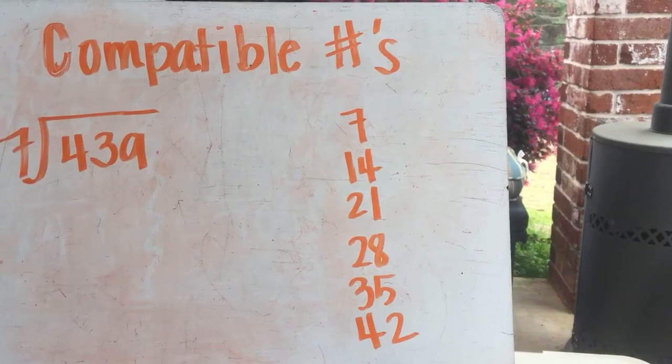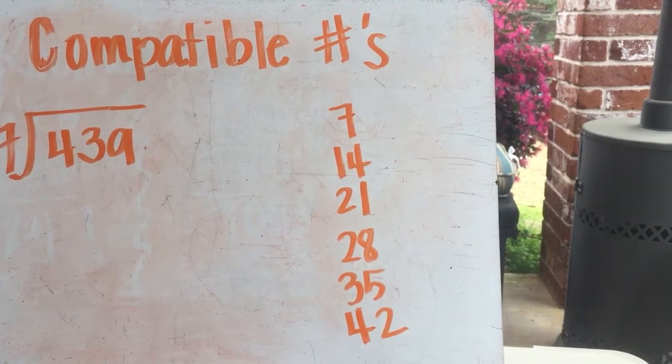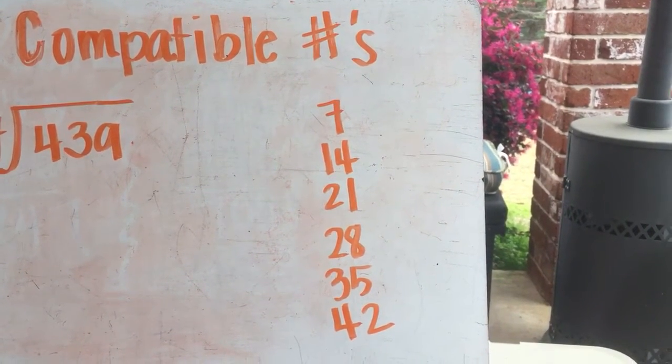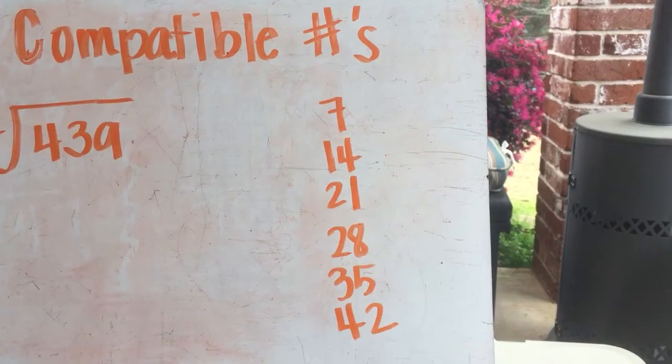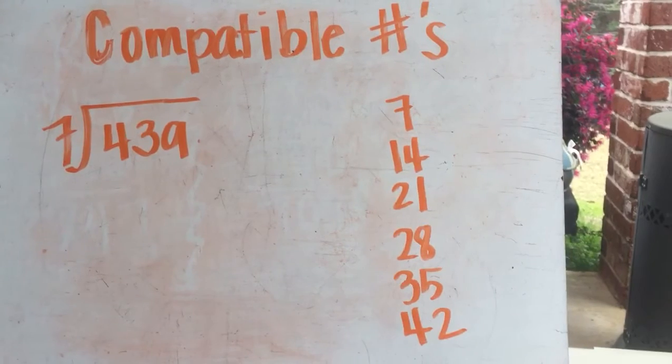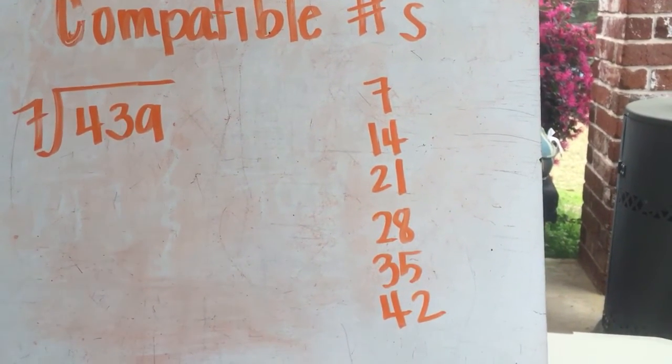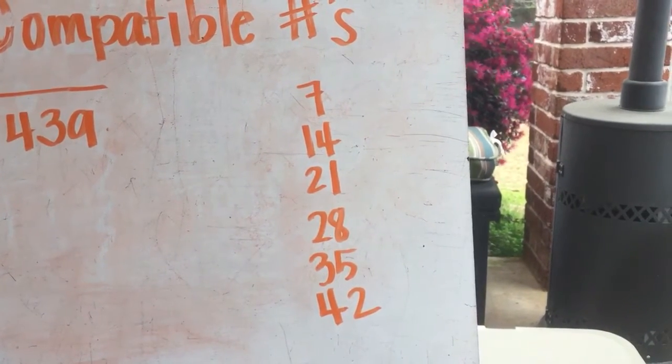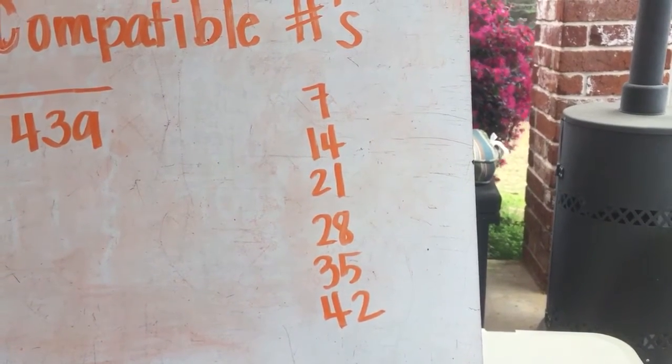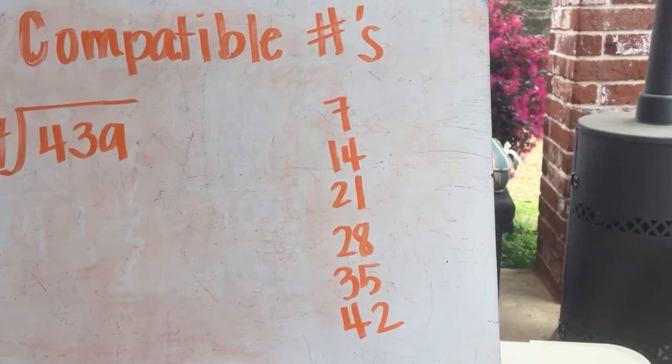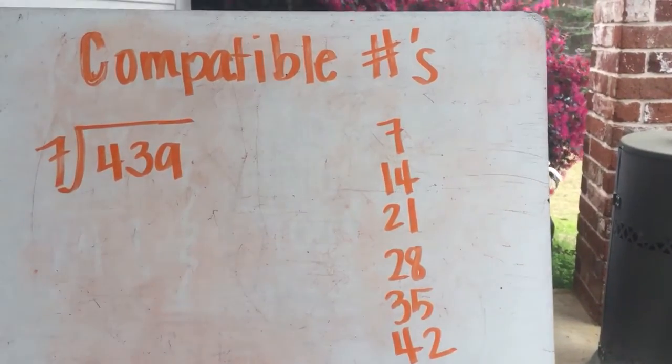It is very similar to making estimations. In fact it is making an estimation using rounding, but instead of being given a place value to round to, compatible numbers encourage the kids to round their number to the nearest multiple of whatever it is you're working with, or to round numbers to things that actually click together like Legos.